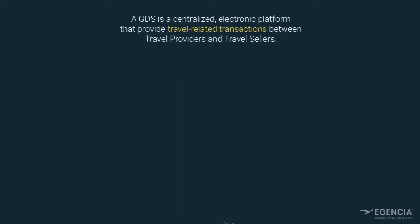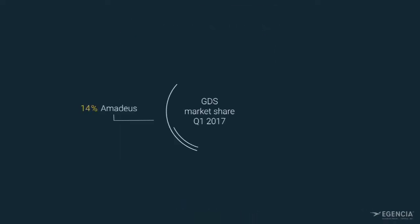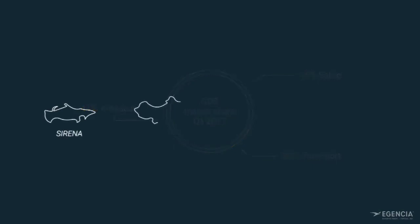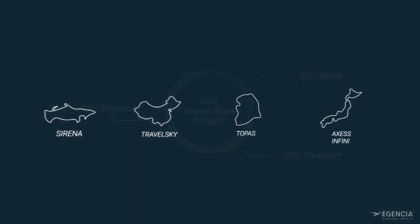Today, three companies — Amadeus, Sabre, and Travelport — hold the bulk of the global market. In some markets, local systems exist. This is the case in Russia with Serena, China with TravelSky, South Korea with Topaz, and Japan with Axis and Infini.